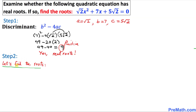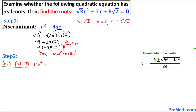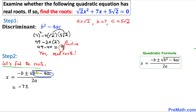Yes, we are going to have real roots for this quadratic equation. For that purpose, we will use the quadratic formula. Let's substitute the values for a, b, and c. We already found that b squared minus 4ac equals 9, so we can replace that with square root of 9, all divided by 2 times a, which is square root of 2.